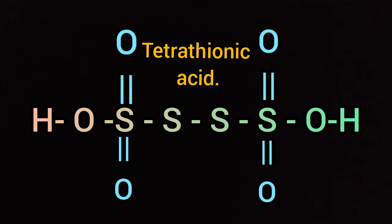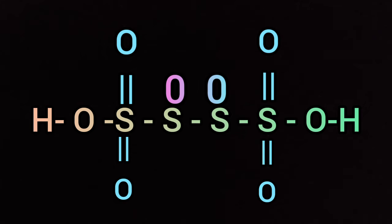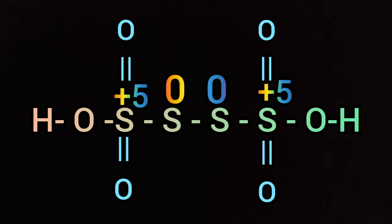There are four sulfur atoms. Thio means sulfur. The sulfur atoms present in the middle have zero oxidation states, and the sulfur atoms connected to these two sulfur atoms on either side have plus 5 oxidation states.